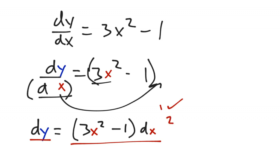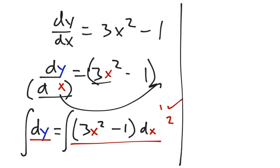Step 2 is Integrate. When I do this, here's what's going to end up. The integral of dy is just y, because when I take the derivative of y, I get dy. So I get y. Don't forget your c — we're going to call it c1 because we're going to get a different constant on the other side.